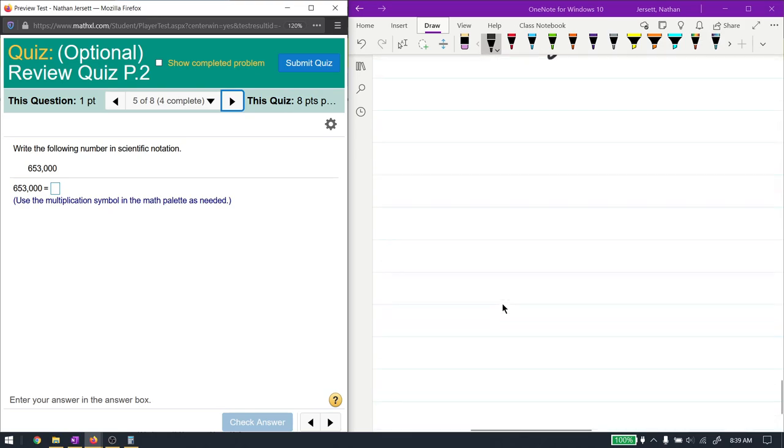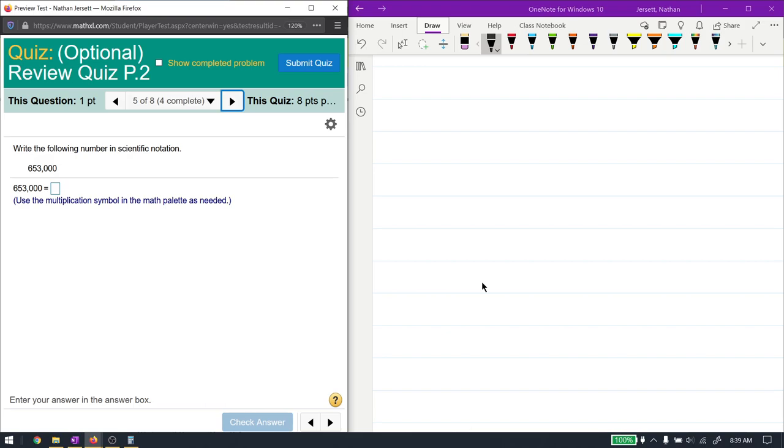Here I have scientific notation, which is just a way of writing very large numbers in a more manageable way to work with them. And how it works is you always put the decimal point after the first non-zero number. So for 653,000, the decimal point is not written, which means it's right there at the very end. And I'm going to move it, counting the spaces. 1, 2, 3, 4, 5. This is the first non-zero number. So the decimal point goes right after that. This gives me 6.53.